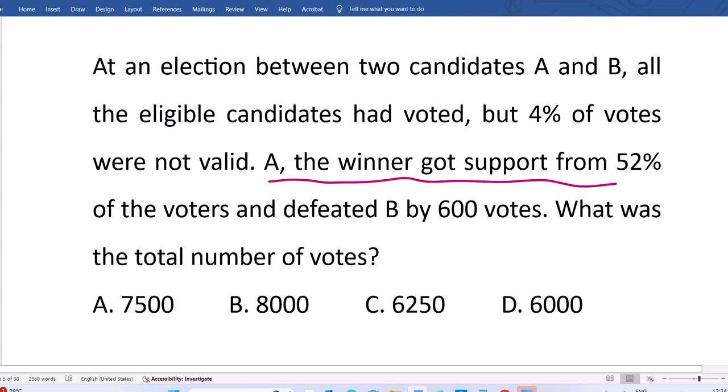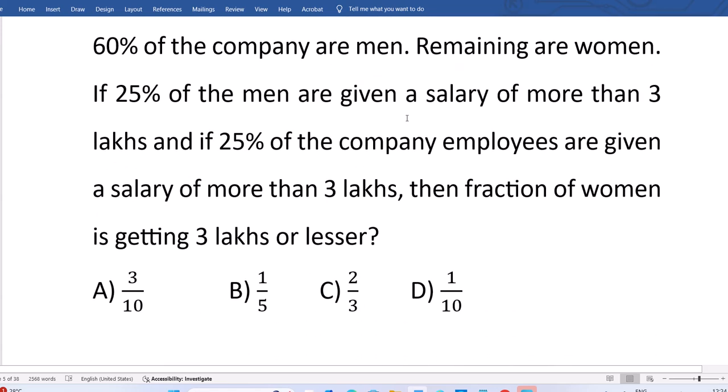A got 52% of voters. Not mentioned valid voters, means A got 52% of total votes. 4% are invalid, remaining is 44% that is for B. Here it is not among the valid or invalid.